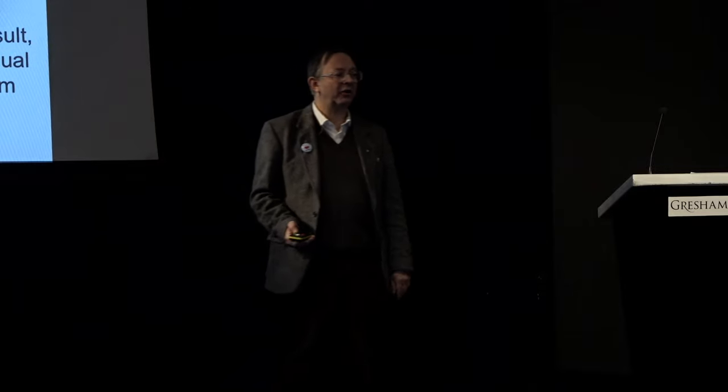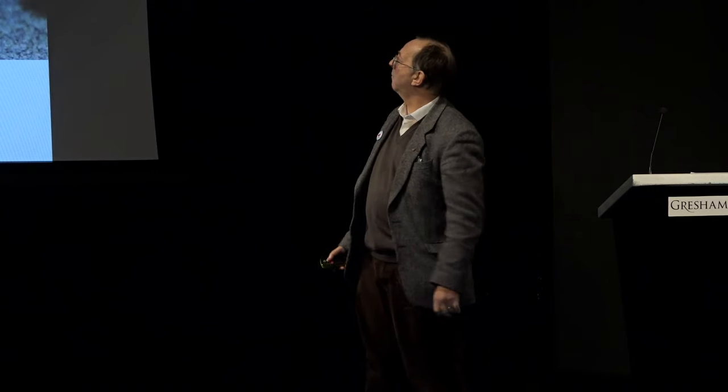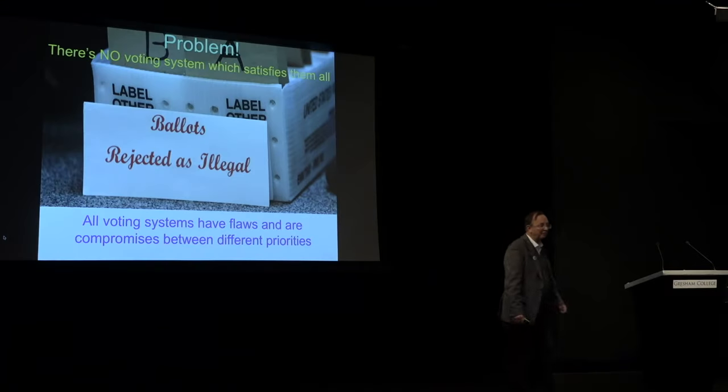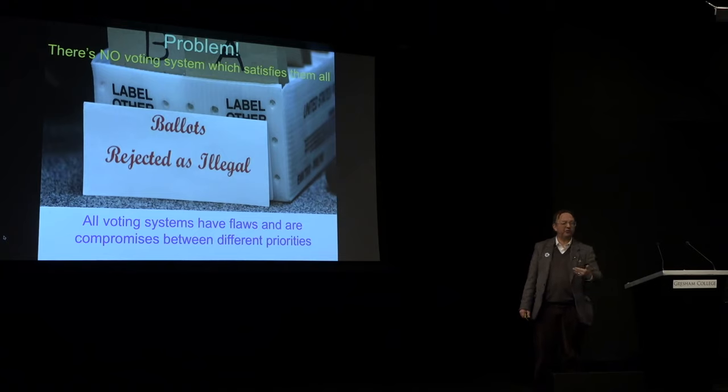So there we have Arrow's original axioms plus a few more. We can write down axioms for voting and say this is what should be. But there's one small problem — what Arrow found out: there is no voting system which can satisfy all four of his axioms. If you take what everyone agrees is reasonable, you can prove there's no system which satisfies them all.